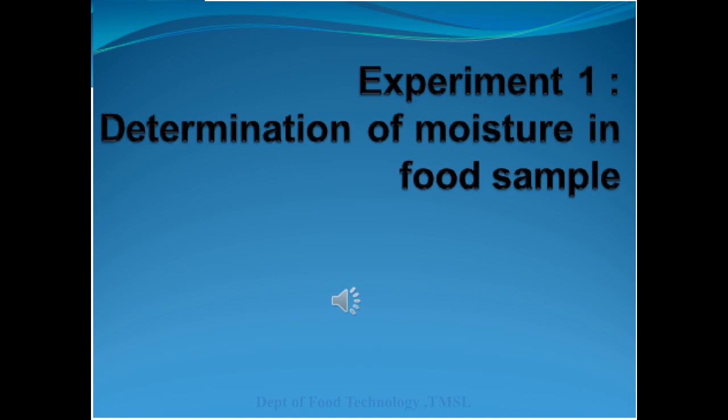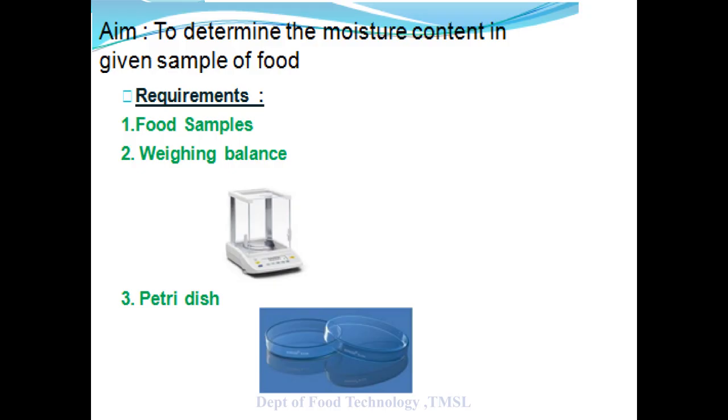To perform this experiment, we have to divide the food into the smallest possible particle size so that the surface area of the overall mass is increased. As the surface area is increased, the release of moisture will be easier. So to perform the experiment easily, we have to divide the food into the smallest possible particle size.